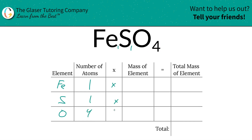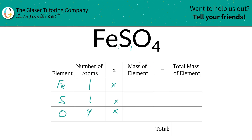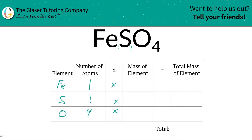We're going to take those number of atoms and multiply by the mass of each element. These masses are found on the periodic table, so let's take a look. Here's iron: 55.85. Oxygen is 16, and sulfur is about 32.07.